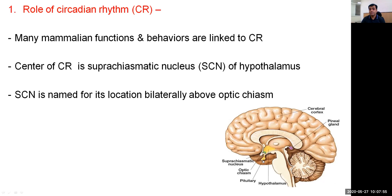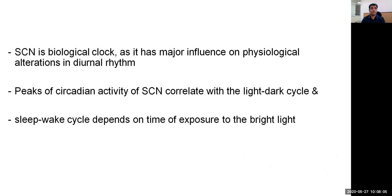As we can see, the suprachiasmatic nucleus is located above the optic chiasm bilaterally. The suprachiasmatic nucleus is regarded as a biological clock, as it has a major influence on physiological alterations in diurnal rhythm. The circadian activity of the suprachiasmatic nucleus correlates with the light-dark cycle, and the sleep-wake cycle depends on the time of exposure to light.